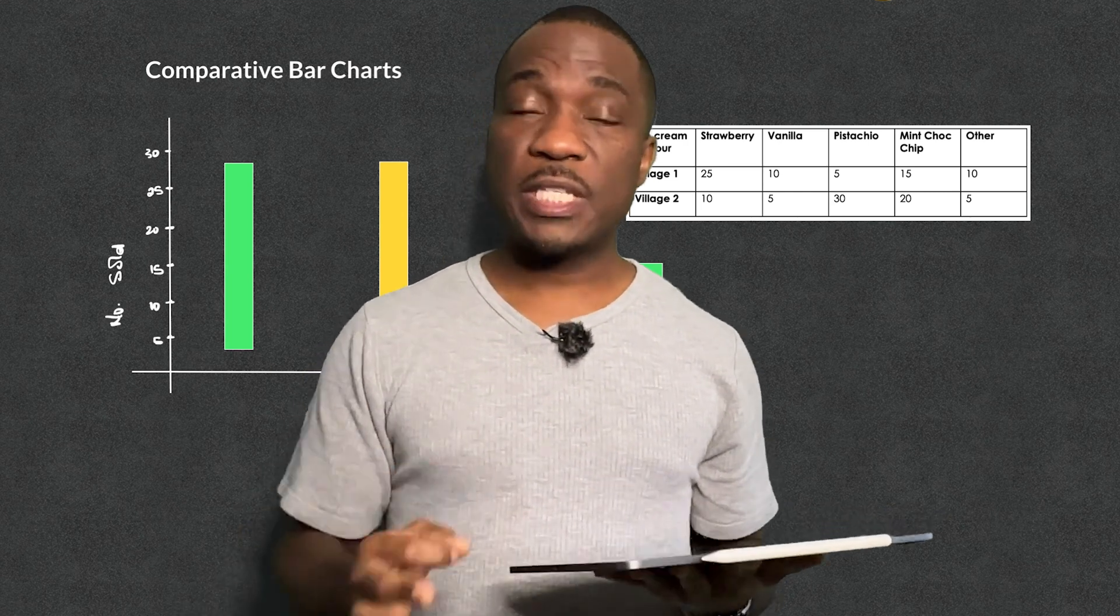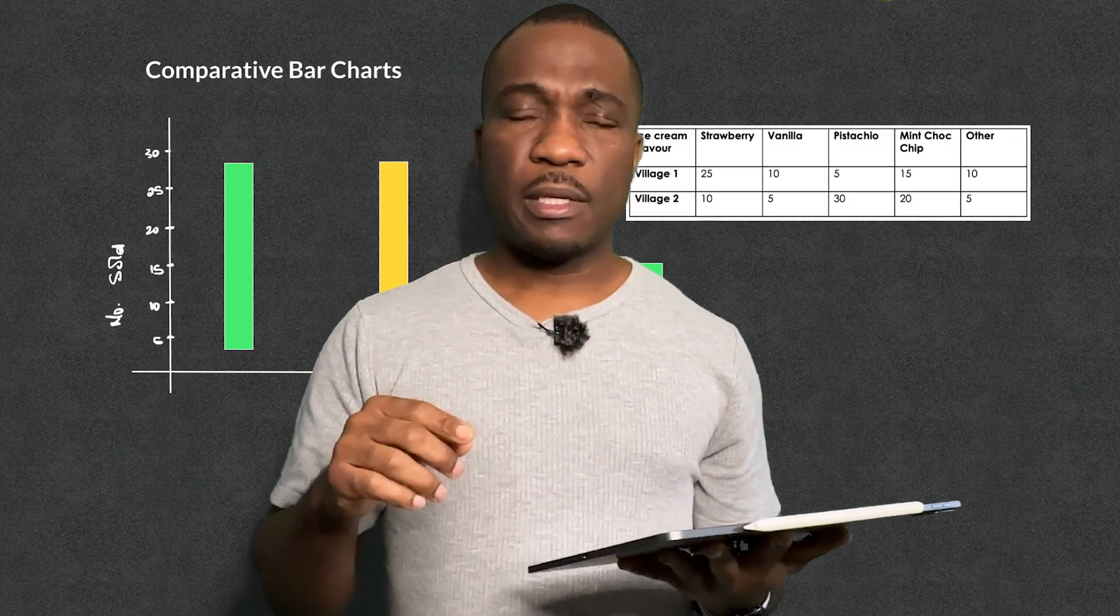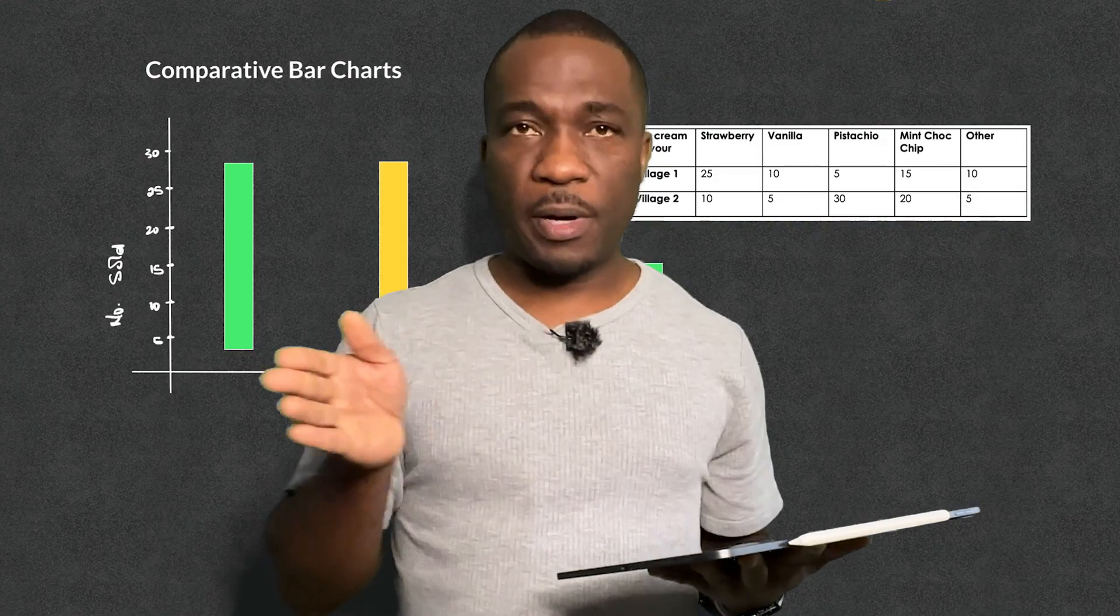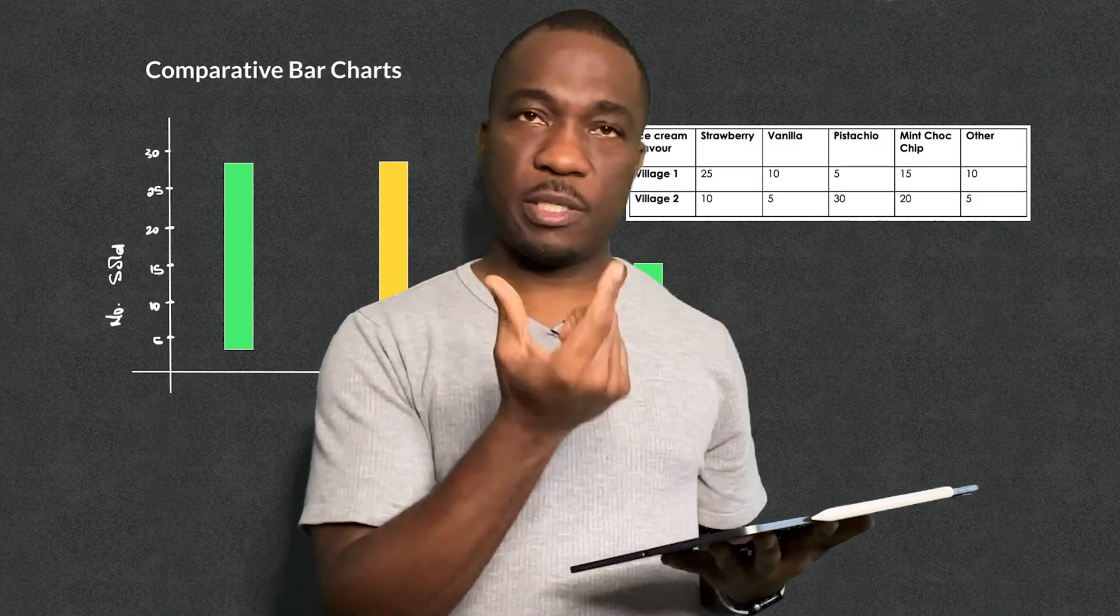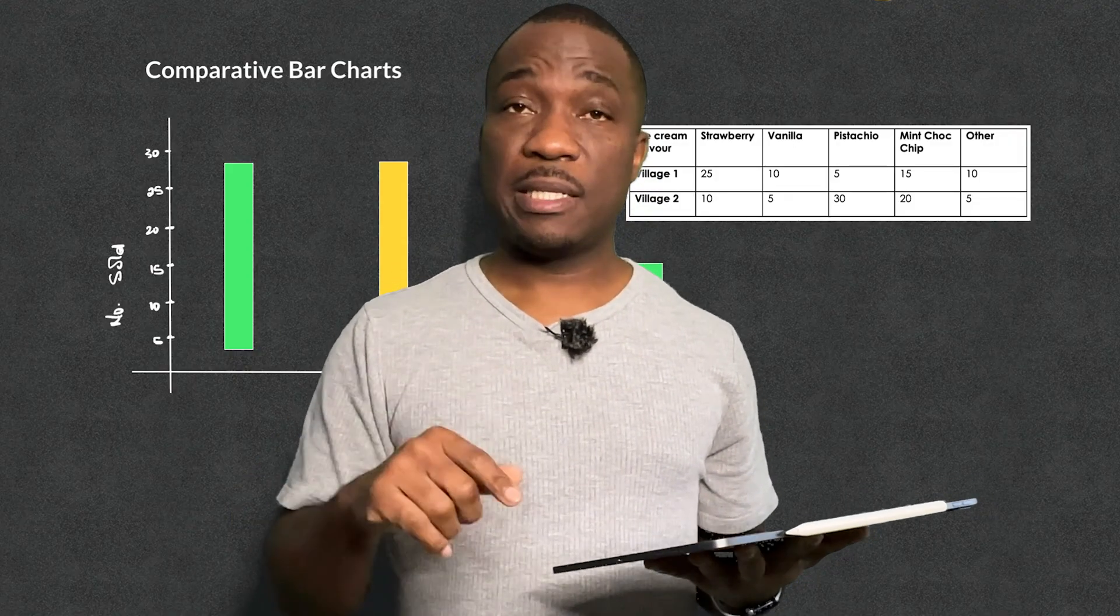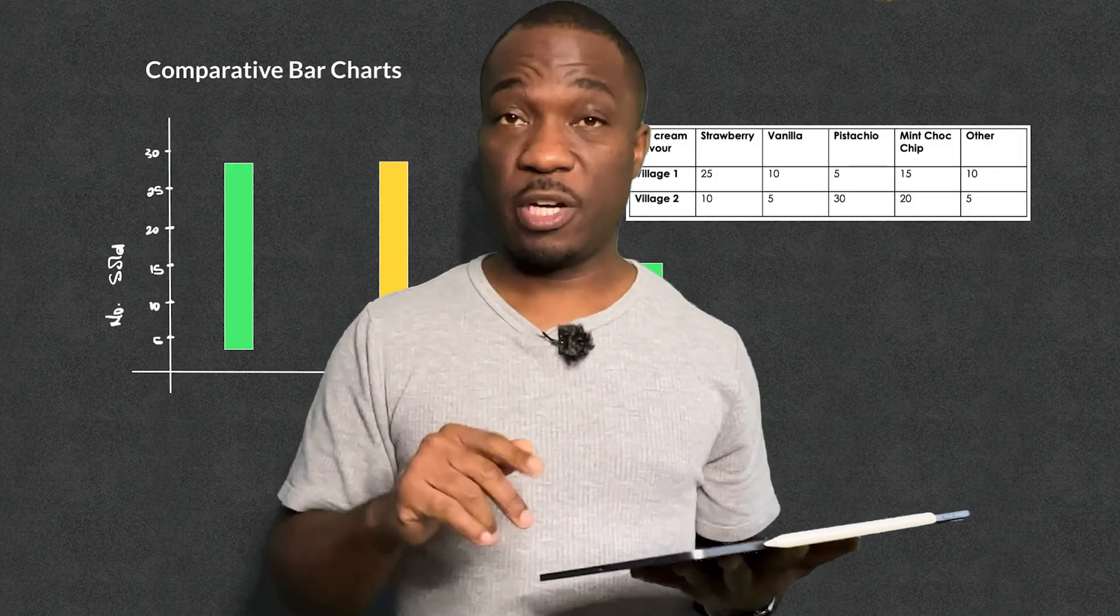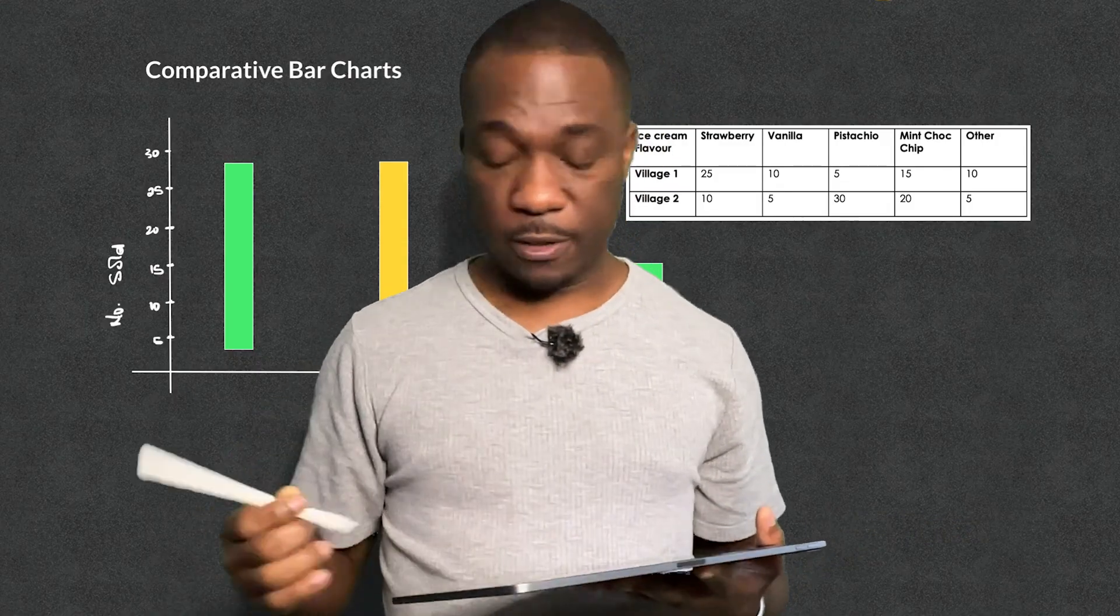Now if you've seen my last video, link coming up over there somewhere, then you will know that for bar charts we look for certain things like the bars need to be the same width and the space between them need to be the same. And I said in that last video that the two bars shouldn't touch. In this one, they will touch. Let's jump into it and see what's going on.